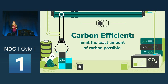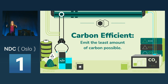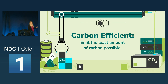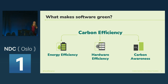What makes software green? Everything in our industry emits carbon — that is just the way our industry works. When I say carbon, I mean carbon dioxide equivalent, which is a grouping term for all the different greenhouse gases based on their global warming potential. For software to be green, we need it to be carbon efficient — to emit the least amount of carbon into the atmosphere as possible. There are three key ways to achieve that: energy efficiency, hardware efficiency, and carbon awareness.